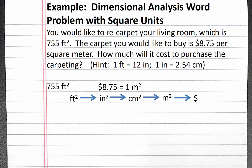Let's follow our plan. We start with 755 square feet and convert from feet to inches using 1 foot equals 12 inches. However, if we only use this conversion factor once, we'll only cancel one of our feet, and our units would be foot-inches. So we need to square our conversion factor as well. Now we've canceled square feet and are in square inches.